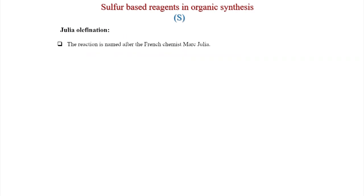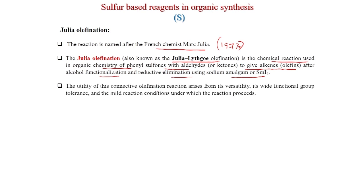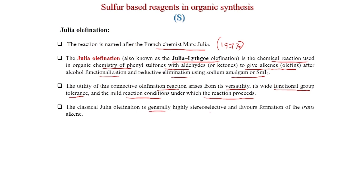First we will discuss Julia olefination, named after the French chemist Marc Julia — this reaction was discovered in 1973. The Julia olefination, also known as Julia-Lythgoe olefination, is the chemical reaction used in organic chemistry of phenyl sulfones with an aldehyde or ketone to give alkenes after alcohol functionalization and reductive elimination using sodium amalgam or samarium iodide.